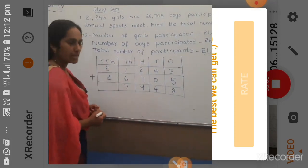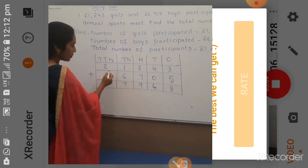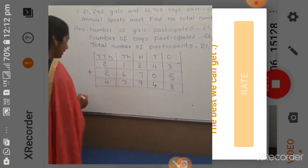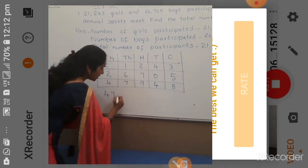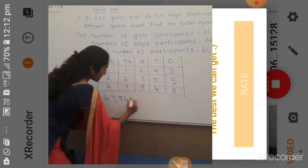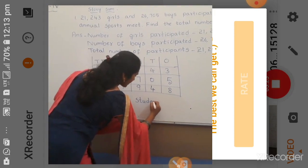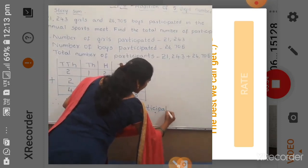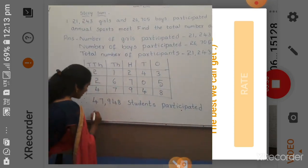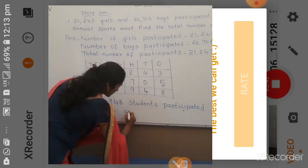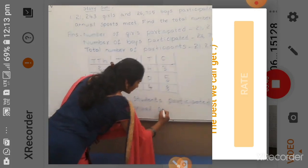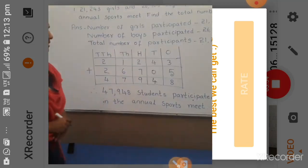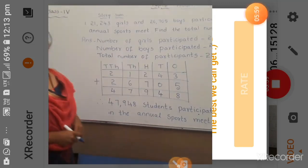Next, the ten-thousands place — TTH means 10,000 place. The numbers we have there are 2 and 2. 2 plus 2 is 4. So therefore, the answer is 47,948. We will write the answer: 47,948 students participated in the annual sports meet. Okay children, this is how we solve the addition of 5-digit numbers. Thank you.